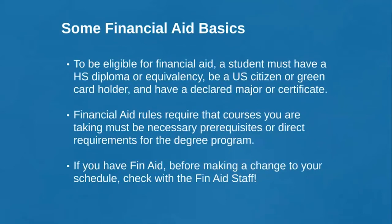To be eligible for financial aid, you have to have your high school diploma or equivalency, be a US citizen or green card holder, and have a declared major or be pursuing a specific certificate. If you're just taking a class or two that's not going towards a major or certificate, financial aid isn't an option for you. If you are currently in high school, financial aid is not available to you — those are federal rules, not GCC rules.